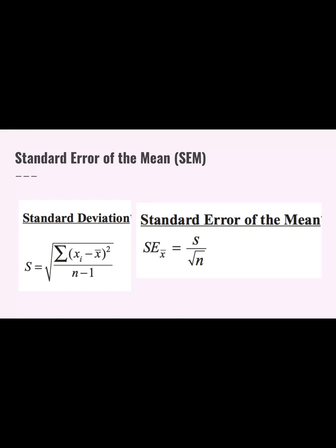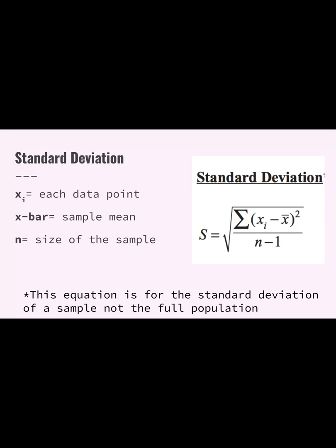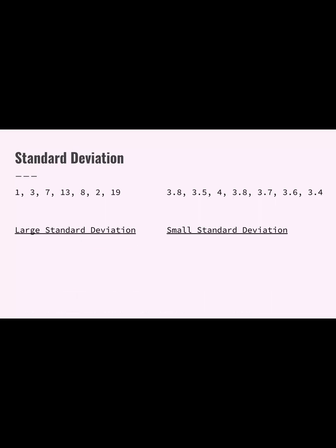In order to use hypothesis testing and draw conclusions with our null and alternative hypotheses, we need to use some statistical measures: standard deviation and standard error of the mean. In AP Bio you do not need to know how to calculate these — they appear on the formula sheet — but we want to understand generally what they mean and how we use them. Standard deviation refers to the variance in the data: a large standard deviation means numbers are spread all over the place, while a small standard deviation means numbers are more closely clustered together.